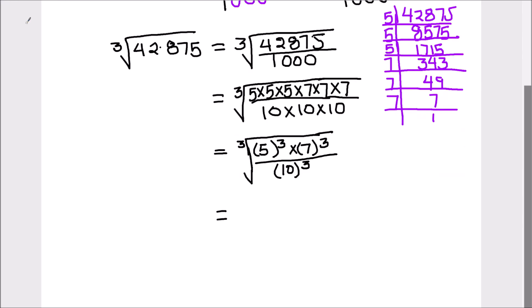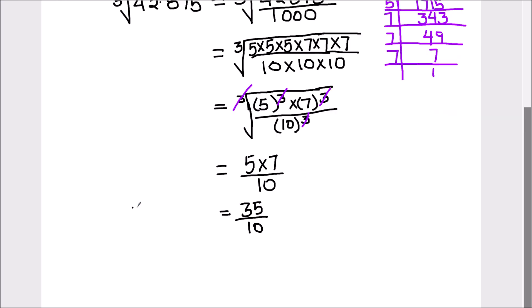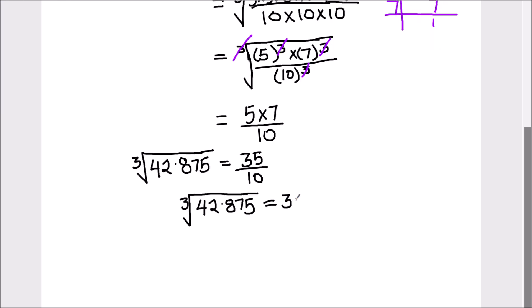This cube and cube root will get cancelled and all the numbers will come out of the cube root sign. So we will have 5 times 7 in the numerator and 10 in the denominator. 5 times 7 is 35 divided by 10, or cube root of 42.875 equals 35 upon 10, which is equal to 3.5.